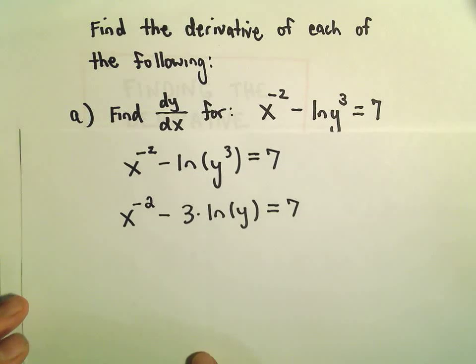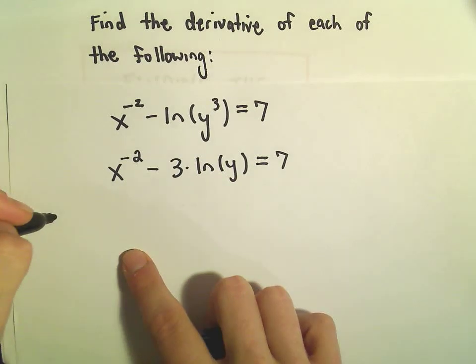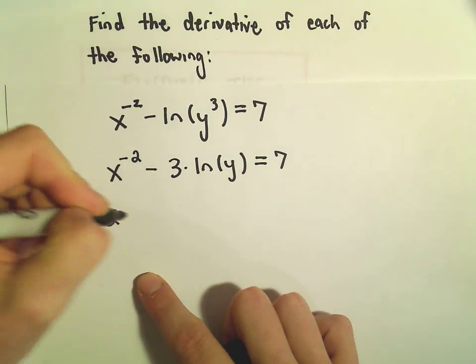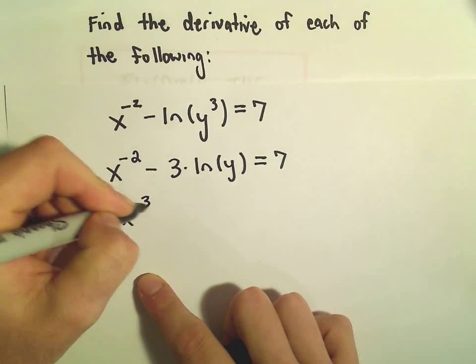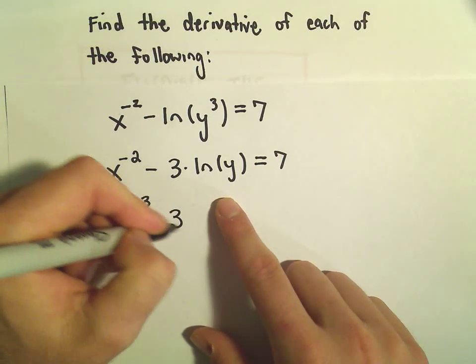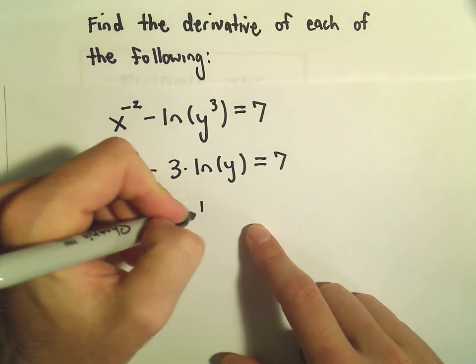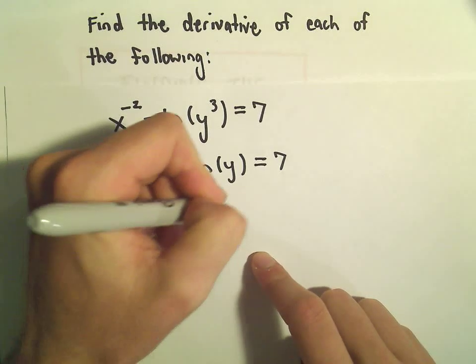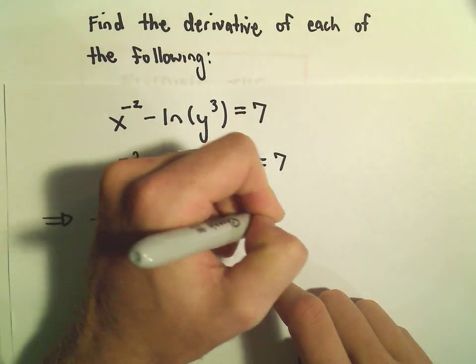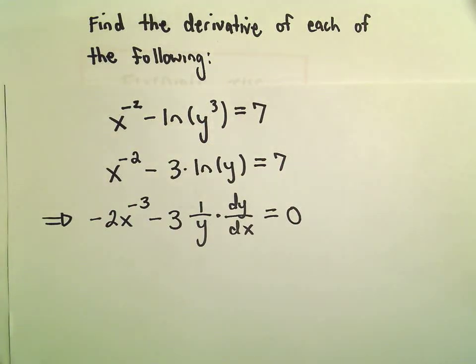And now I will take the derivative of both sides with respect to x. If we take the derivative of x to the negative second, we'll get negative 2x to the negative 3. And then when we take the derivative of the natural logarithm of y, we'll just get 1 over y, but then we have to multiply by our dy dx. And then on the right side, the derivative of 7 is just going to give us 0.